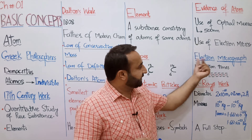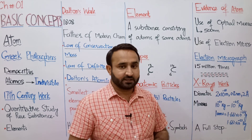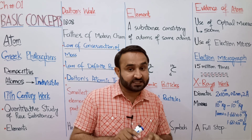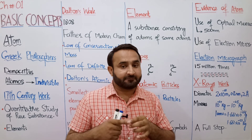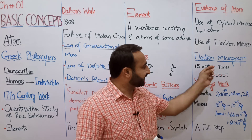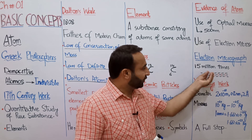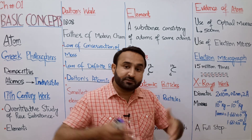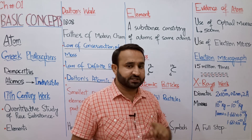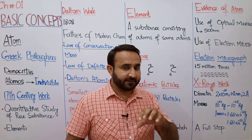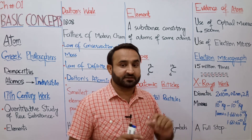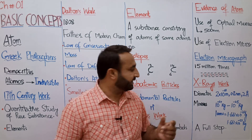Electron microscope سے لی گئی photograph کو electron micrograph کہتے ہیں۔ A photograph taken with the help of a microscope is called a micrograph, and a photograph taken with the help of an electron microscope is called an electron micrograph۔ ہماری book میں graphite کا ایک piece ہے جسے electron microscope نے 15 million times بڑا کر کے دکھایا۔ اس electron micrograph میں جو red نظر آ رہے ہیں وہ basically carbon atoms ہیں — graphite جو کہ carbon کی allotropic form ہے۔